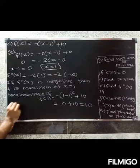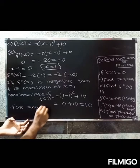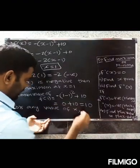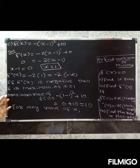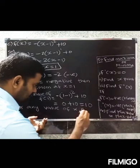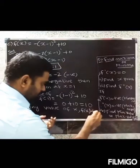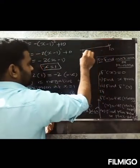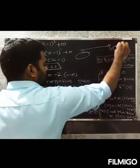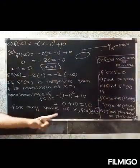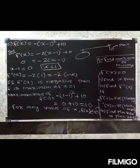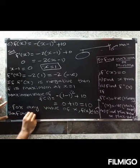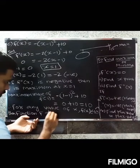For any value of x, f(x) is less than or equal to 10. The maximum value is 10. Therefore, the function f does not have a minimum value.